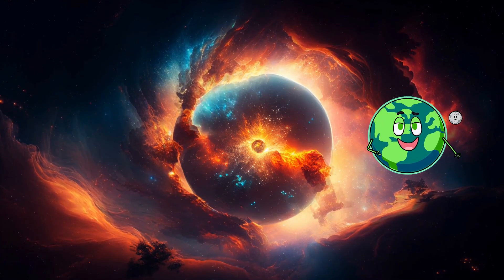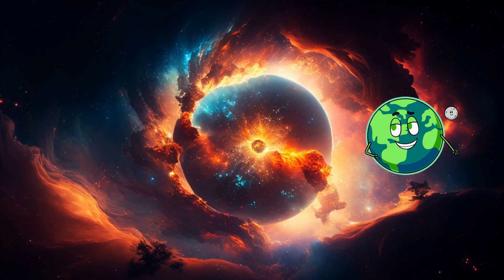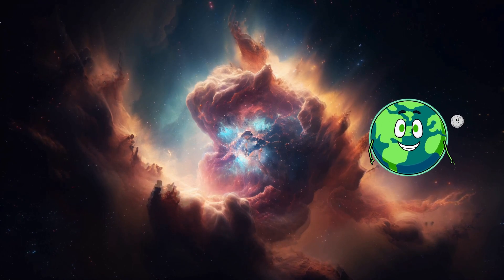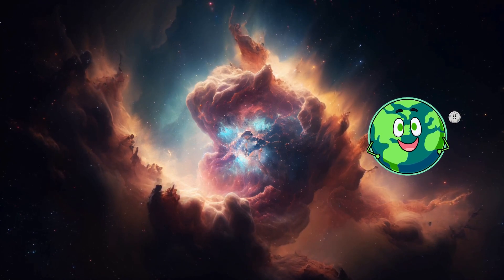A nebula is like a giant space cloud made of dust and gas. They're huge, colorful, and super beautiful, floating in space like a cosmic rainbow.